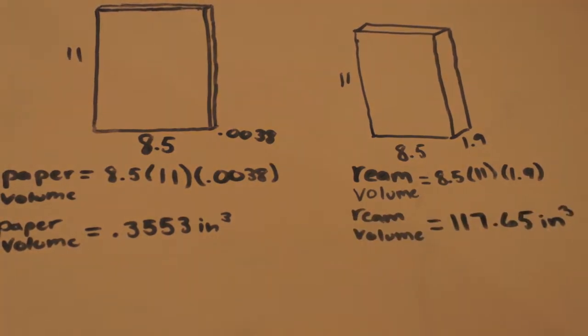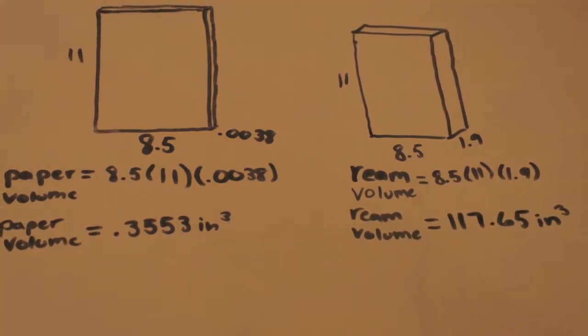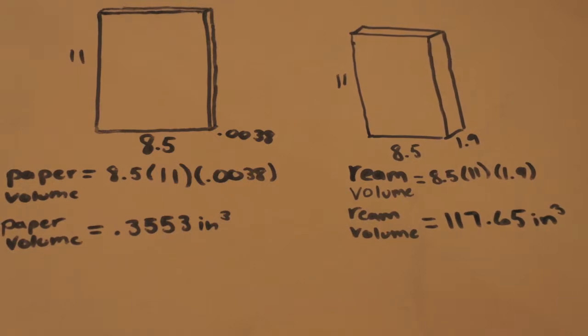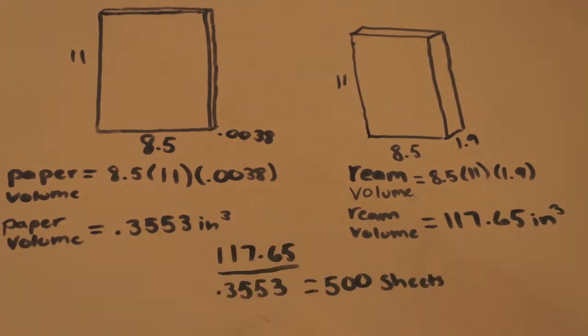The volume of a ream of paper is 117.65 inches cubed. When I simply divided the volume of the ream by the volume of the sheet of paper, I found out that there are 500 sheets of paper in a ream. I will call the client back with my answer.